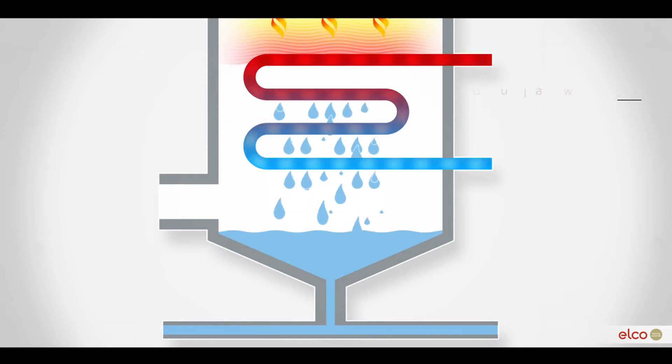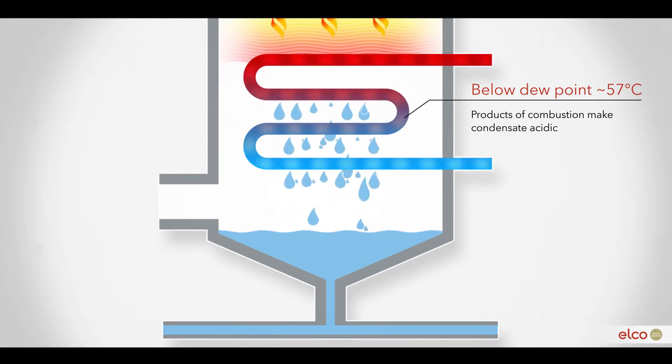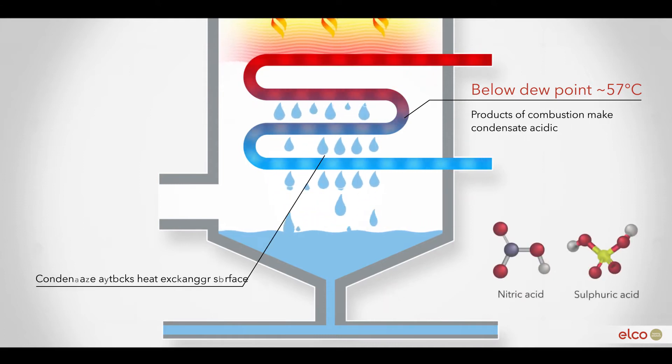But when the flue gases cool down further below the dew point of around 57 degrees Celsius and condensate forms, the products of combustion make the condensate acidic. This condensate attacks the heat exchanger's surface.